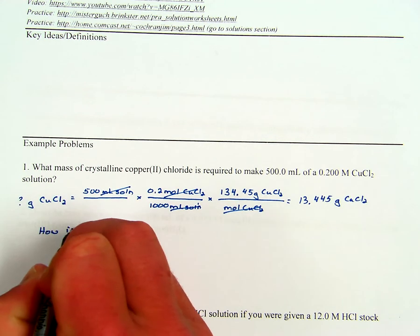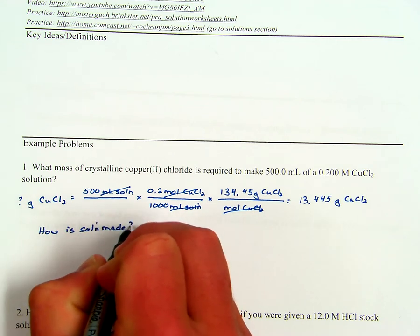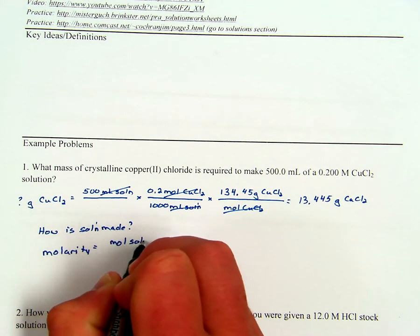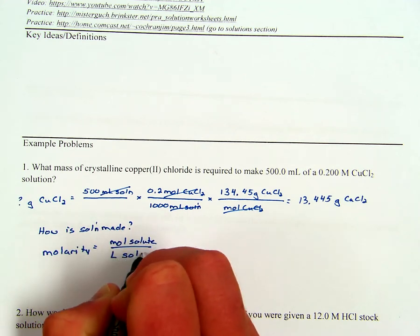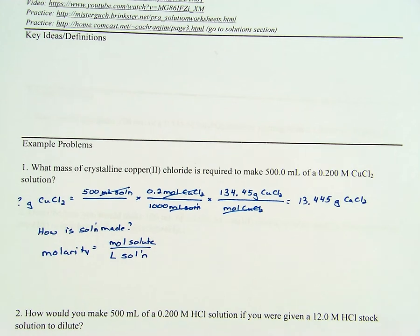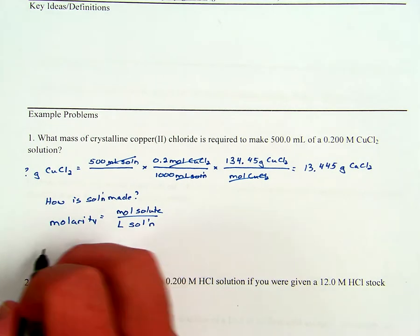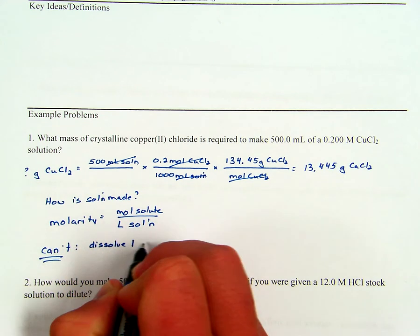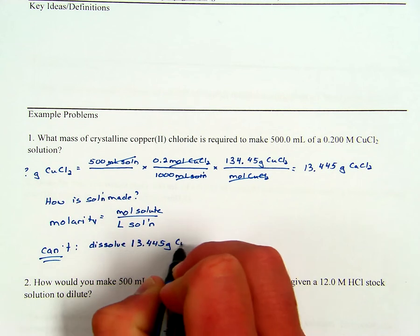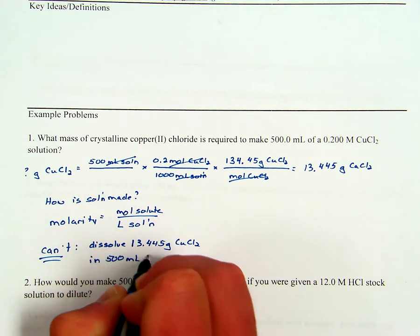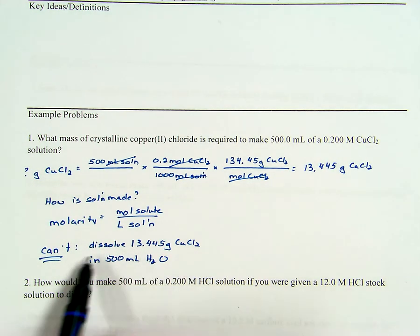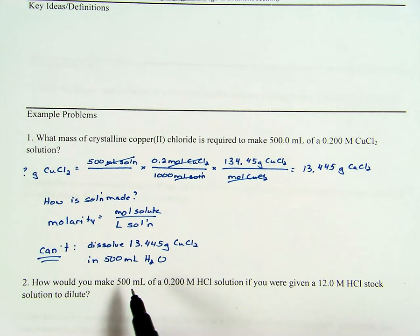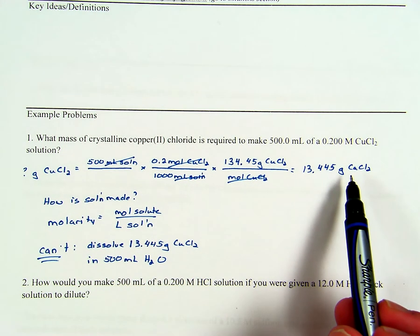How is the solution made? Molarity is the ratio of moles of solute per liter of solution. What you can't do — and this is the common misconception, the mistake a lot of people make — is simply dissolve 13.445 grams of CuCl₂ in 500 milliliters of water. That won't work because it's going to end up giving you more than 500 milliliters of solution, since the solute takes up some space.